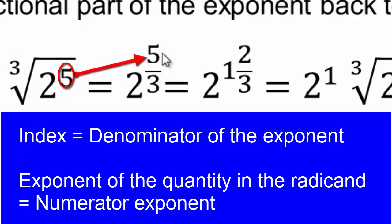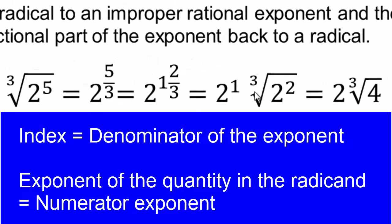Which is a mixed fraction of one and two thirds. So two to the one, which is two. And two to the two thirds is basically cube root of two squared, or four. So cube root of thirty-two simplified is two cube root of four.